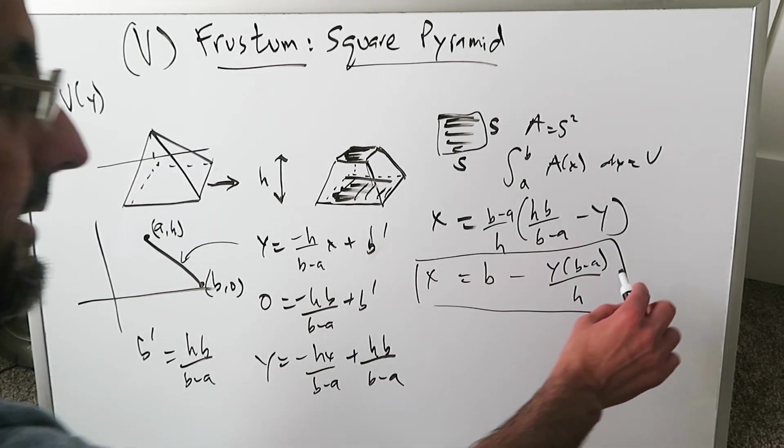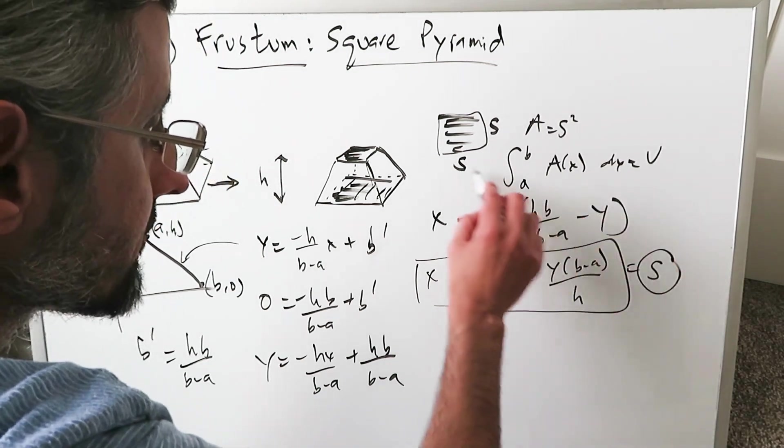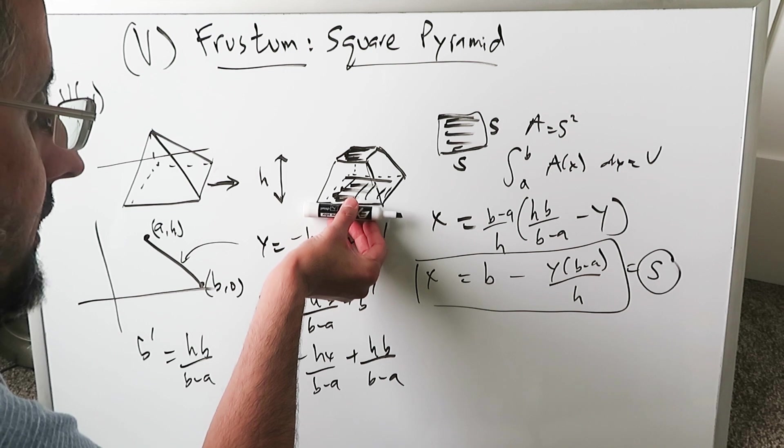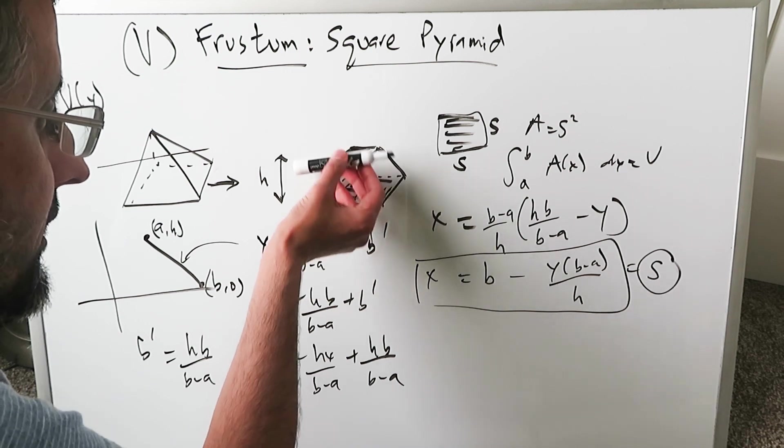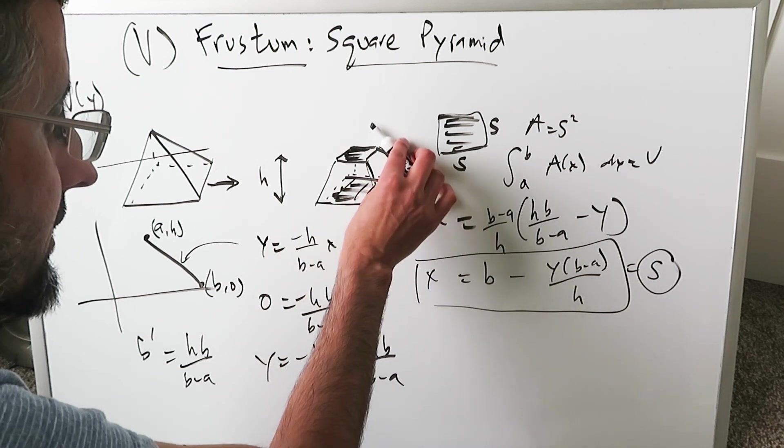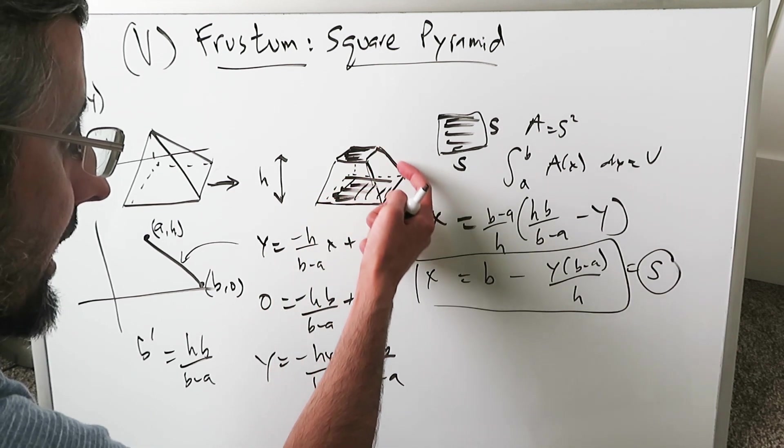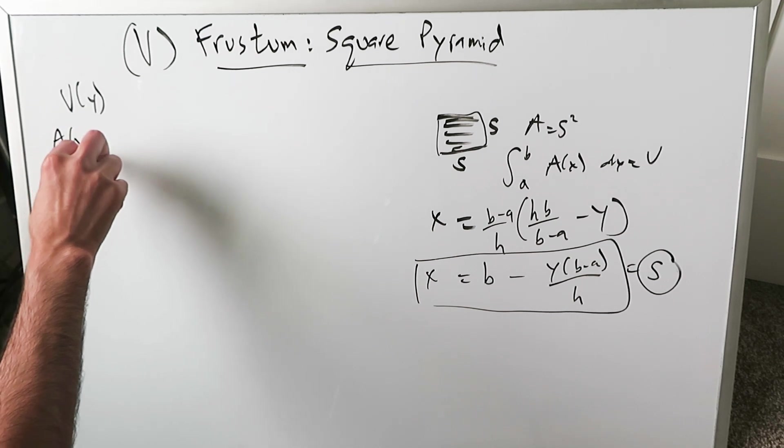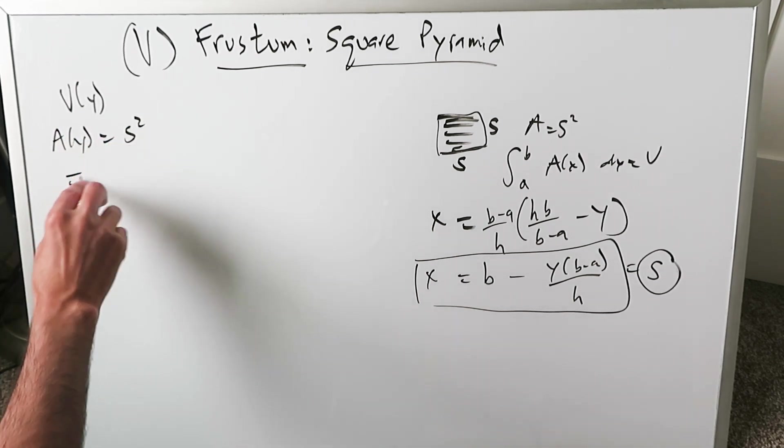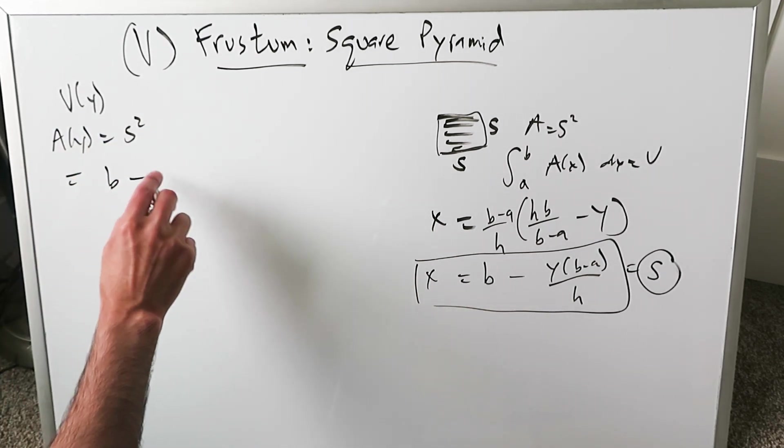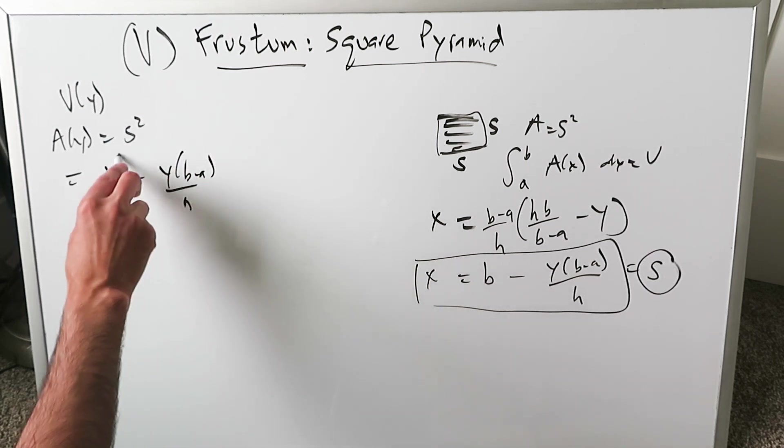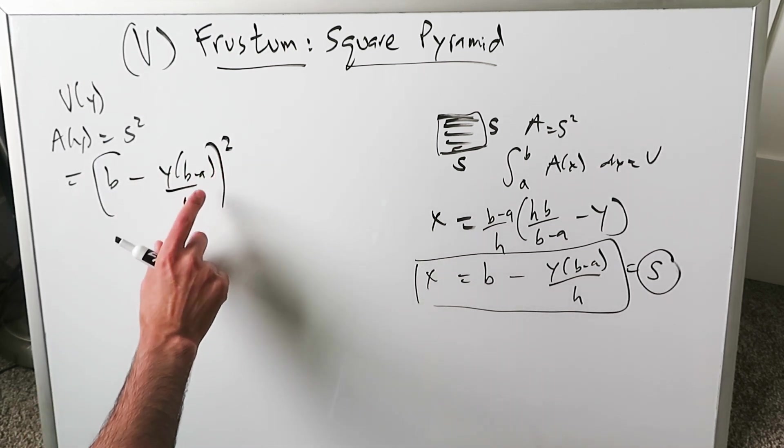This is also equal to your side S, because your slices are dependent on the convergence as you're seeing from bottom up. There's a linearity between the height, this line, and the slope. Area with regards to Y equals S squared, which equals that squared: B minus Y times B minus A over H, all squared.